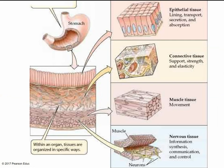This shows how different tissue types work together to form an organ. Take the stomach as an example. We have epithelial tissue lining the inside, connective tissue providing elasticity so the stomach can stretch and distend, muscle tissue allowing movement so the stomach can churn and help digest food, and nervous tissue so we can sense activity happening within the stomach.